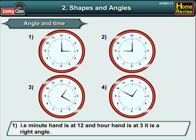When the clock shows 3 o'clock, which means our minute hand is at 12 and our hour hand is at 3, so it is a right angle.